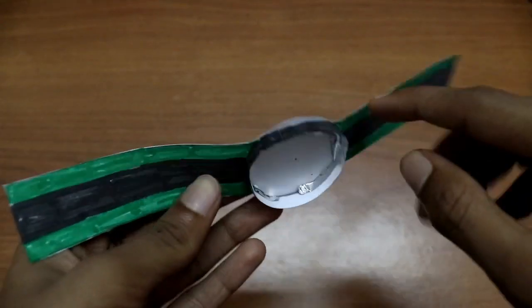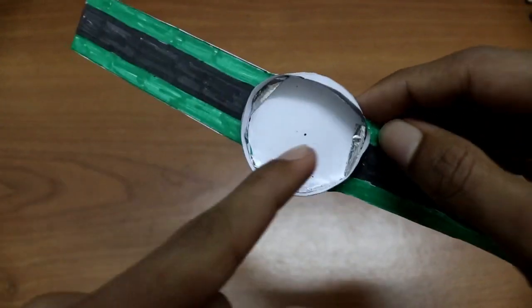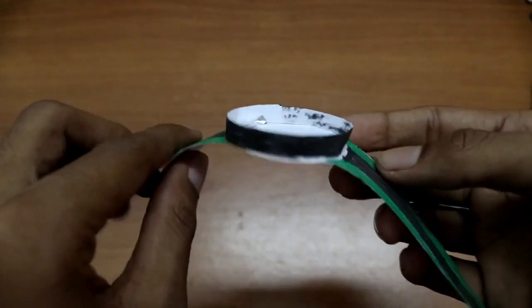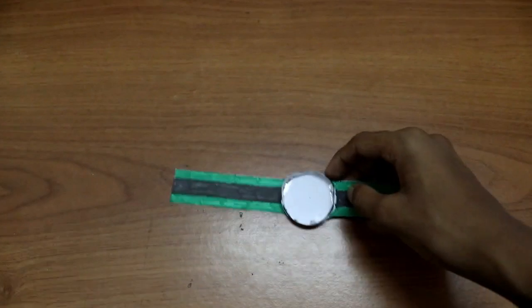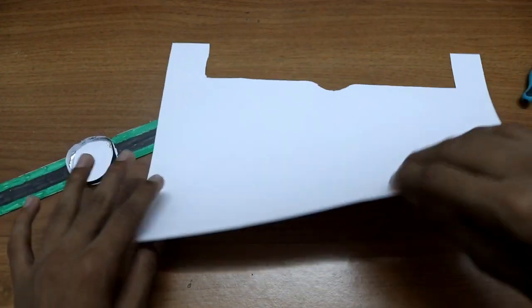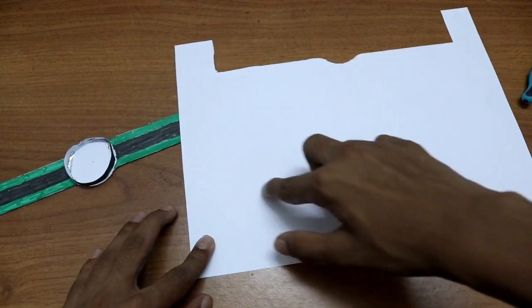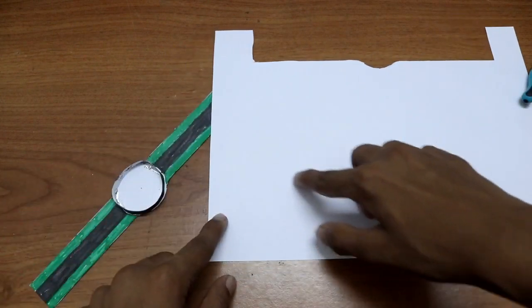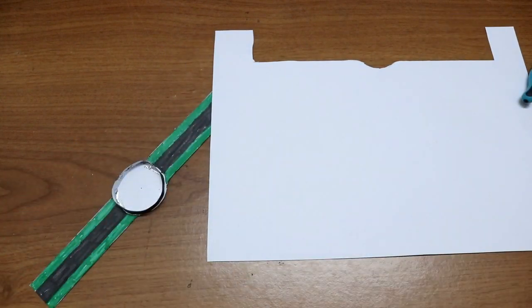I have pasted it using a bit of gum and a small piece of cellotape. As you can see, when I bend it nothing happens. Now we need to draw a bigger circle to get the front dial.